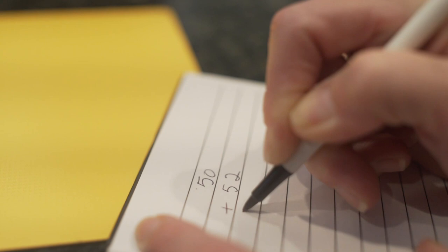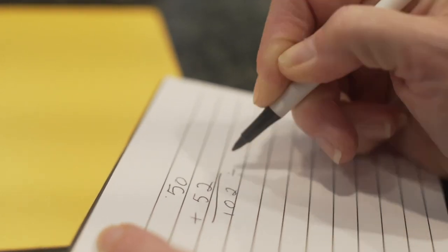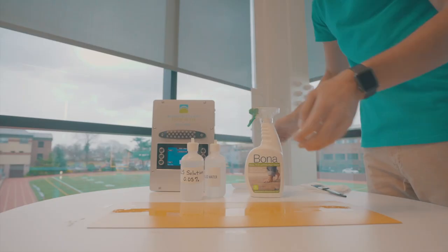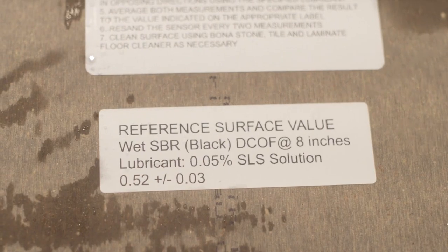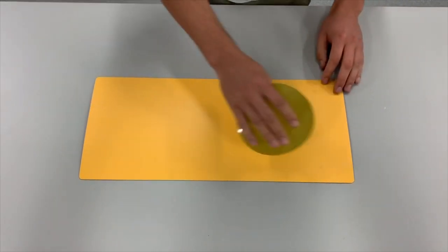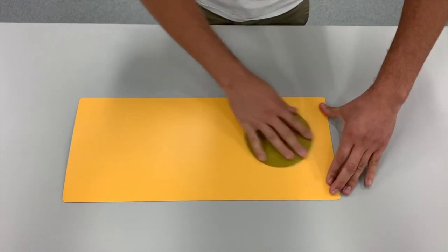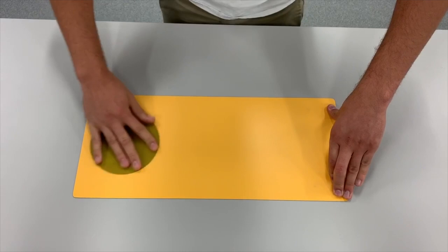Now calculate the average of the two results. If the average is 0.03 above or below the value stated on the back of the validation surface, proceed with testing. If the value falls above or below that range, use the lapping dish to restore the surface and begin this process again to validate your sensor.